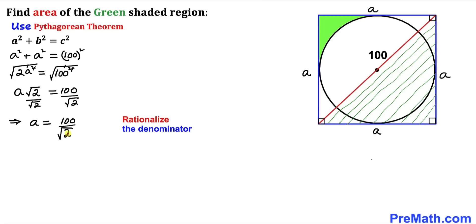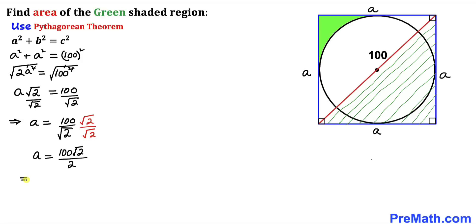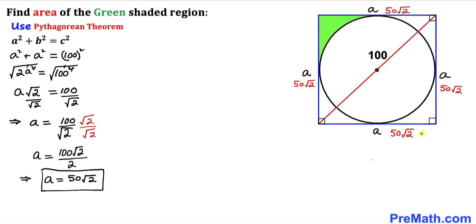Now let's rationalize the denominator by multiplying and dividing by √2. So a = (100 × √2) / (√2 × √2) = (100√2) / 2. Therefore our value of a turns out to be 50√2 units. So the side length a of the square is 50√2.